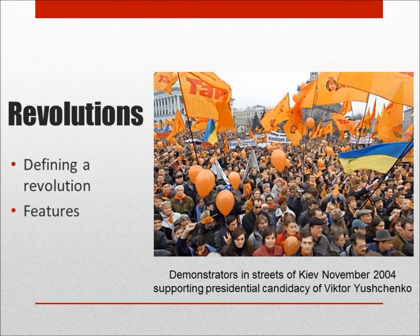A revolution, by contrast, is a social movement where participants seek to drastically alter or completely overturn the existing social, political, and/or economic order. For example, in the Bolshevik Revolution, control of the economy quickly came under control of Lenin and the Bolsheviks, and the Communist Party also restructured the political and social institutions of the former Russian Empire.